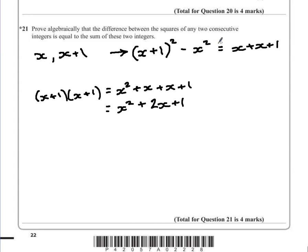So the difference between these two values—I'll draw an arrow to show where the next calculation is. We're going to have x² + 2x + 1, take away x².